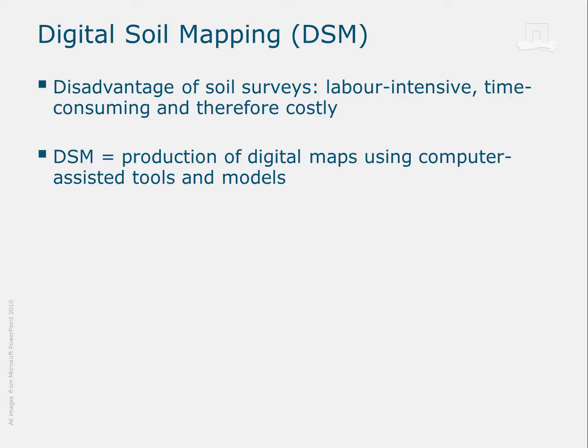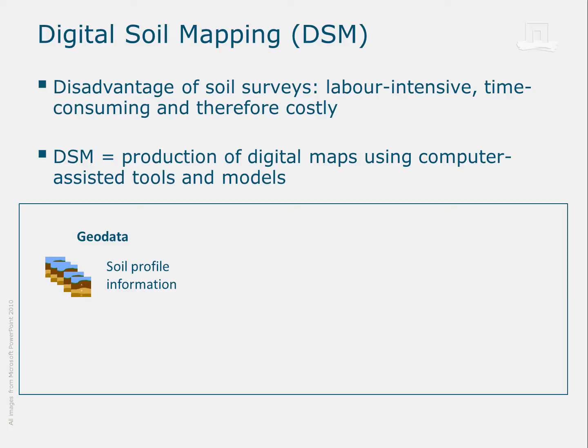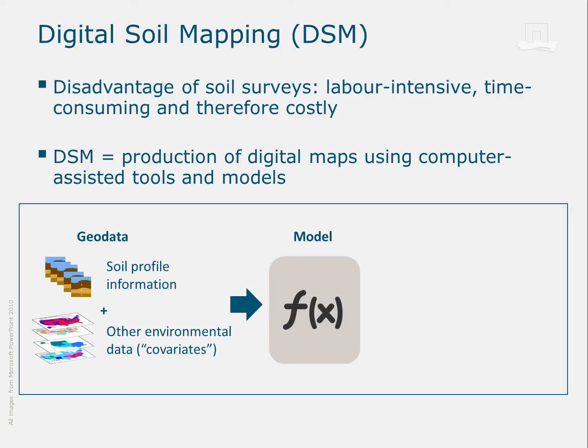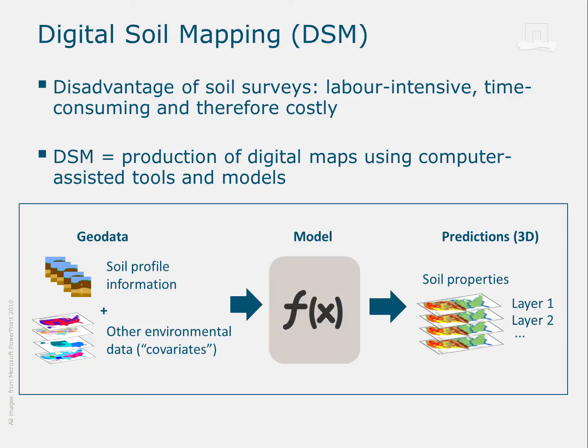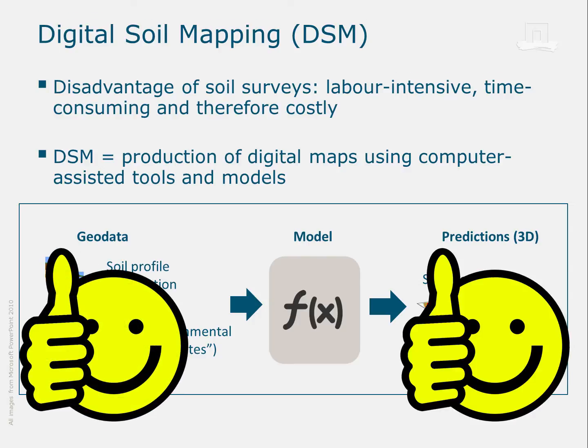In a nutshell, digital soil mapping is the production of digital maps using computer-assisted tools and models. Here is how it works. You use existing soil information — point information or existing maps — and other environmental data that cover the same area. You feed these data into a statistical model, which helps you predict soil properties for the whole area. The model cannot provide you with the truth for all locations. What it calculates is the probability of a certain soil or soil feature occurring in other places that lack measured data. The accuracy of these predictions depends strongly on the quality of the data that you feed into the model. Good quality input means good quality output.